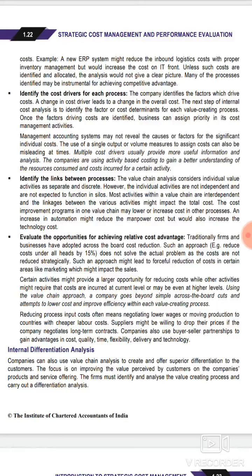For example, an increase in automation might reduce manpower cost but would also increase technology cost. If you introduce automation in a company, labor and manpower costs decrease because work is automated. But this leads to an increase in technological cost — because the technology introduced also has costs for maintenance and setup.